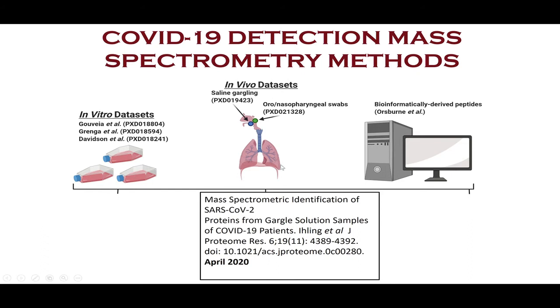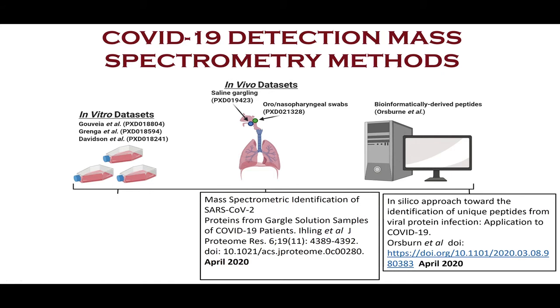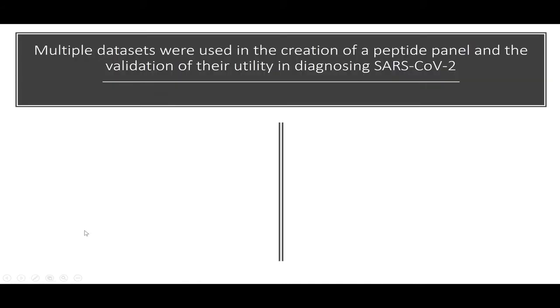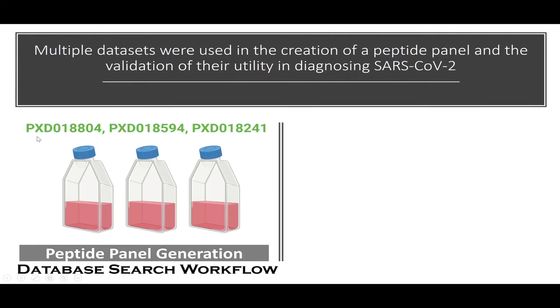In order to generate the peptide panel, we started with clinical samples as well as in silico approaches to predict the presence of proteins from the genome available in the early days. These methods were used to detect potential candidates for diagnosis or vaccination. We also looked at cell culture datasets, which helped us get a deeper understanding of the SARS-CoV-2 proteome. Using these multiple datasets, we were able to generate a 639 peptide panel using database search workflow methods.